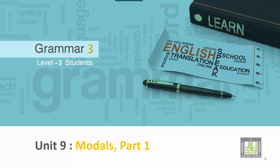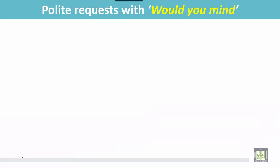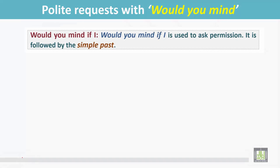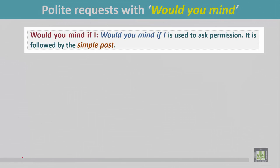Grammar three for level three students, unit 9: modals, part 1 — polite requests with 'would you mind.' 'Would you mind if I' is used to ask permission. It is followed by the simple past form of the verb.